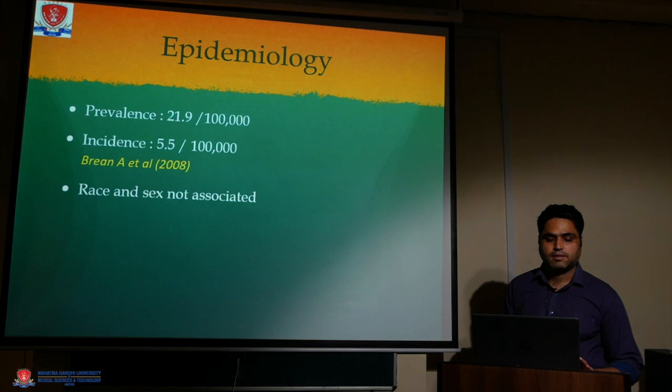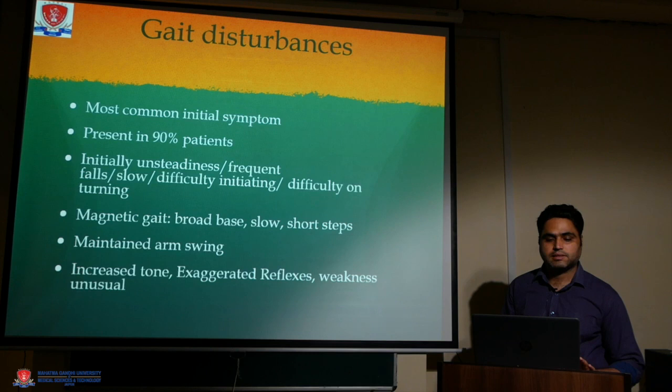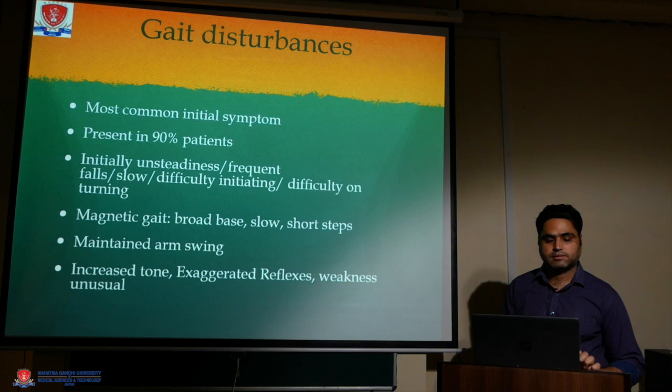Epidemiology: prevalence is 21.9 per 100,000; incidence is 5.5 per 100,000. Race and sex are not associated. Gait disturbance is the most common initial symptom, present in 90% of patients — including unsteadiness, frequent falls, slowness, and difficulty initiating movement or turning. The magnetic gait is broad-based with slow, short steps, maintained arm swing, increased tone, and exaggerated reflexes; weakness is unusual.